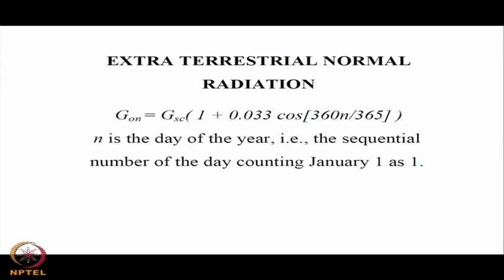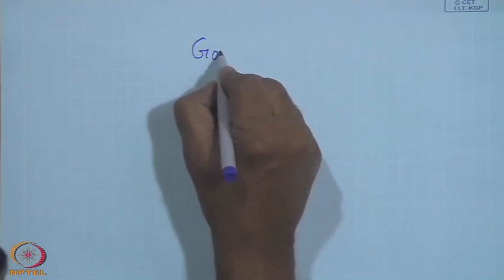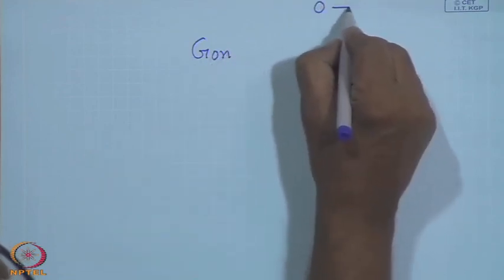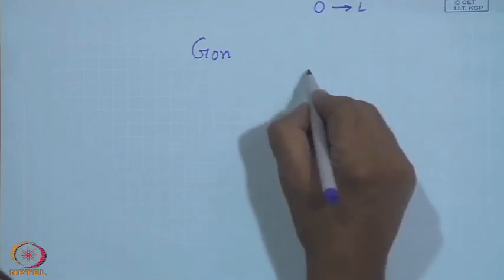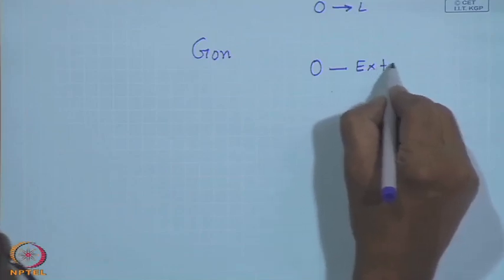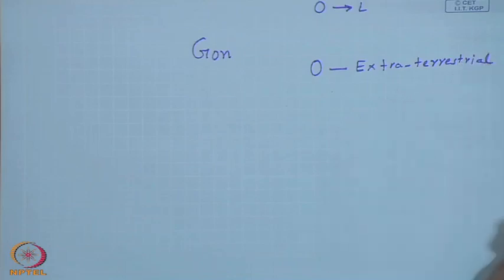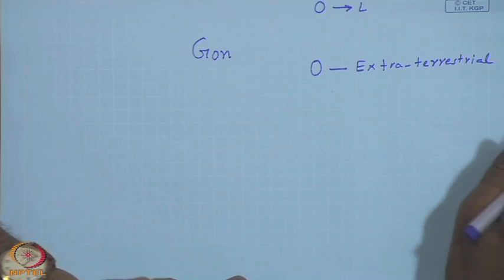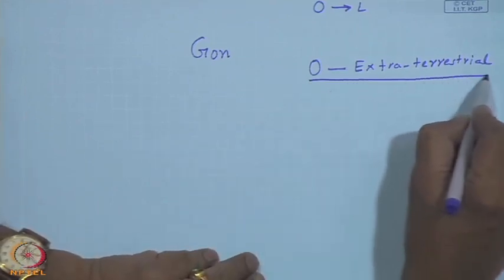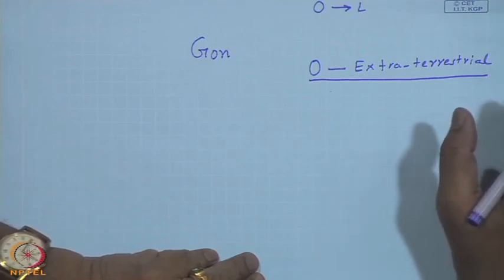We define G_ON, where the suffix O stands for extraterrestrial. This needs to be understood in context — not extraterrestrial beings, but this is the amount of radiation that would be received if the atmosphere has 100% transmissivity. In other words, if there is no absorption and no scattering in the atmosphere, you will receive a certain amount of radiation at any location on Earth, which we call the extraterrestrial radiation.